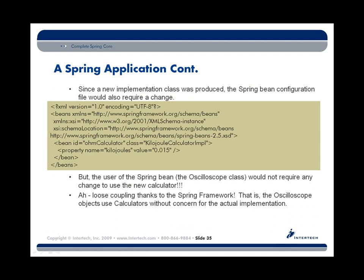All we'd really need to do is implement a KilojouleCalculatorImpl of our Calculator interface, providing the same methods — ohms, amps, and volts — but now using a kilojoules property instead of watts for the calculations. In our Spring bean configuration file, instead of CalculatorImpl we'll have KilojouleCalculatorImpl, still called ohm calculator, with a dependency-injected value of 0.015 for kilojoules. And how does the Oscilloscope class change? The answer is it doesn't change a bit. By using interfaces, we have completely loosely coupled application code — the implementation can change readily, and the Spring framework handles those details.